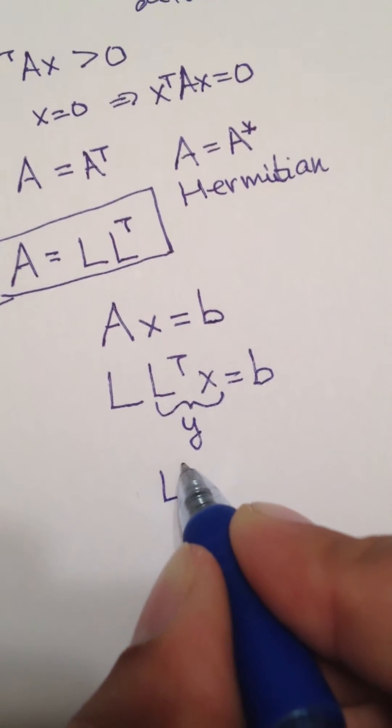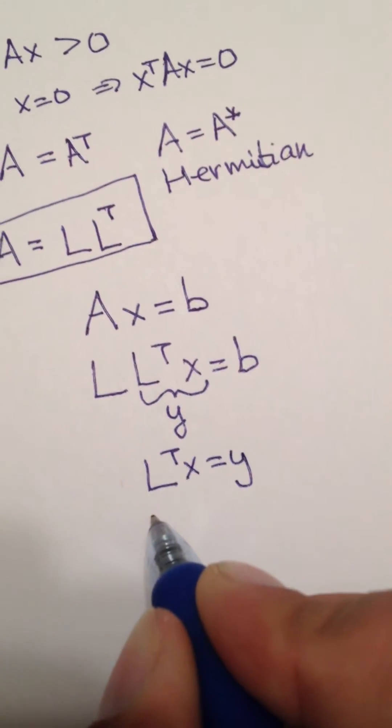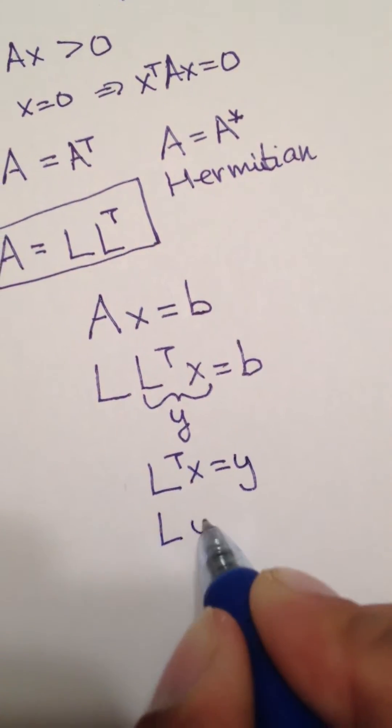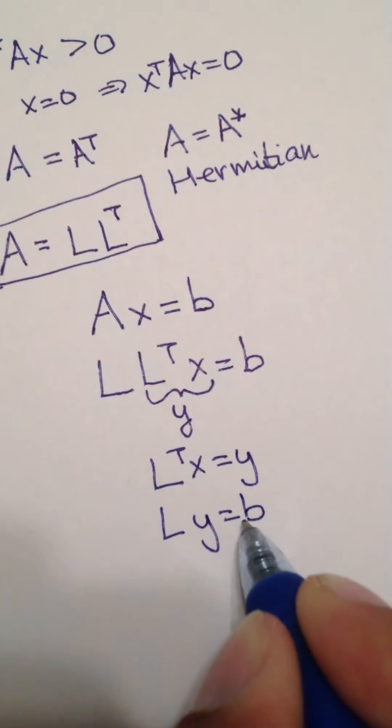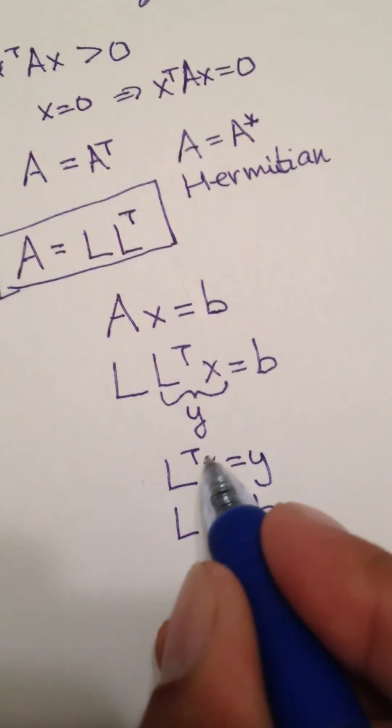So you can say L transpose X is equal to Y, and L Y is equal to B. So if you solve this for Y, then you have Y, and then you can solve for X.